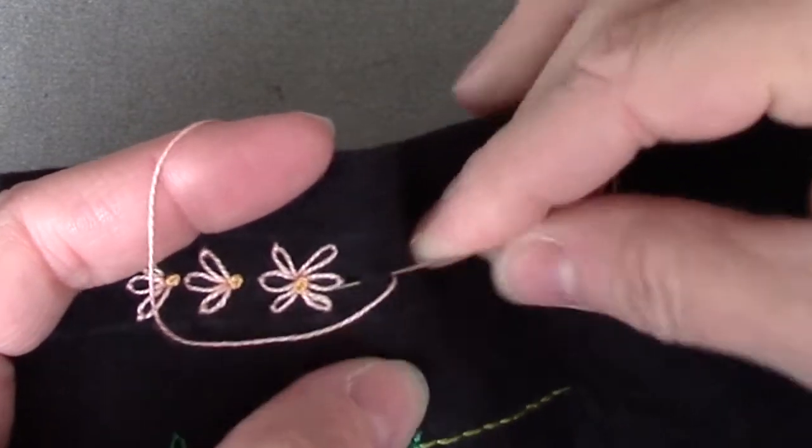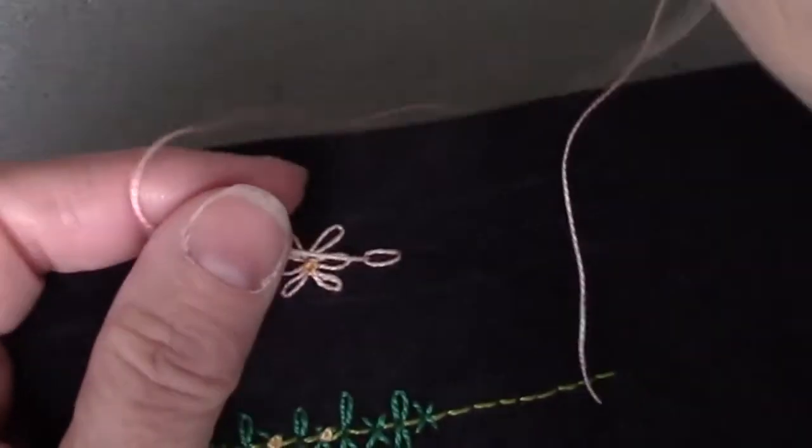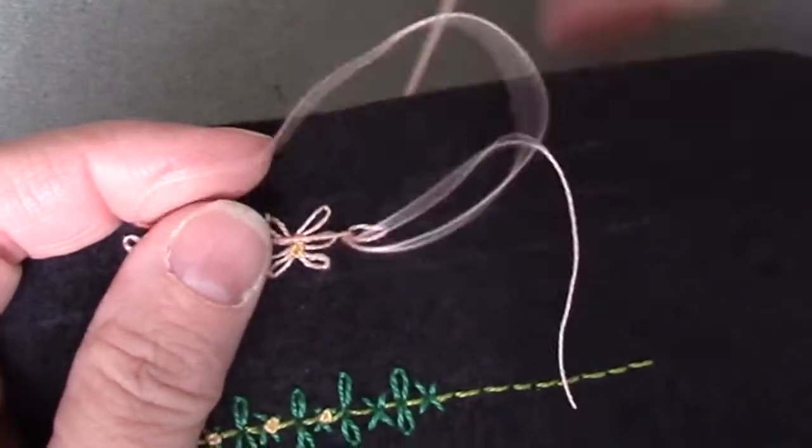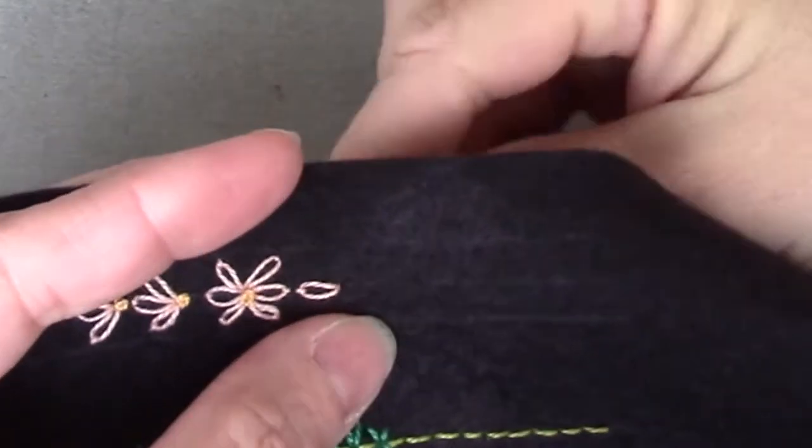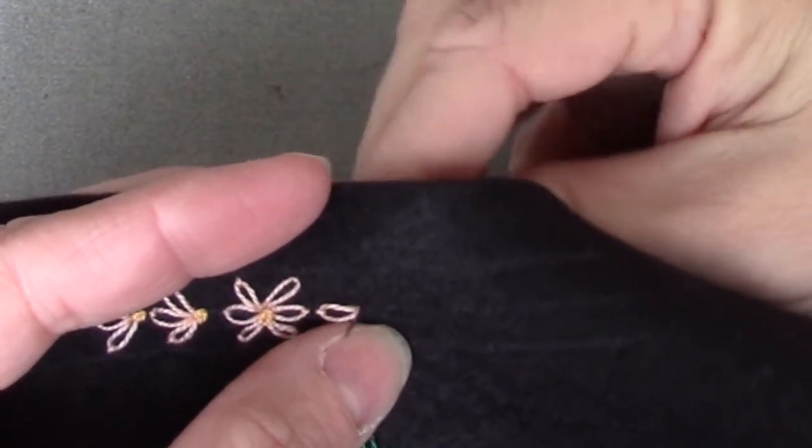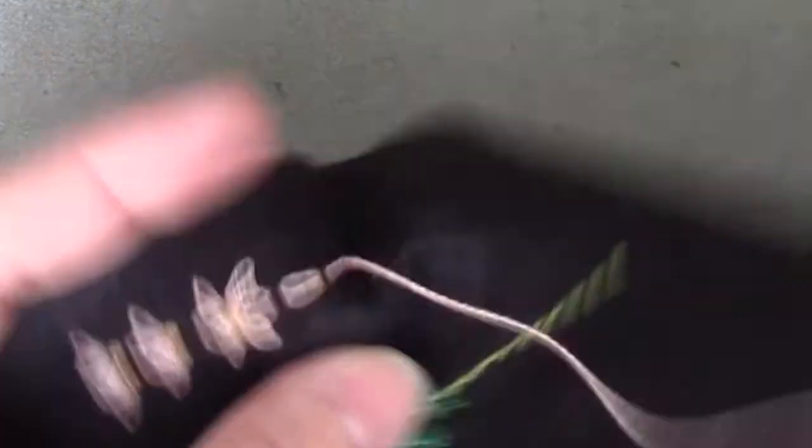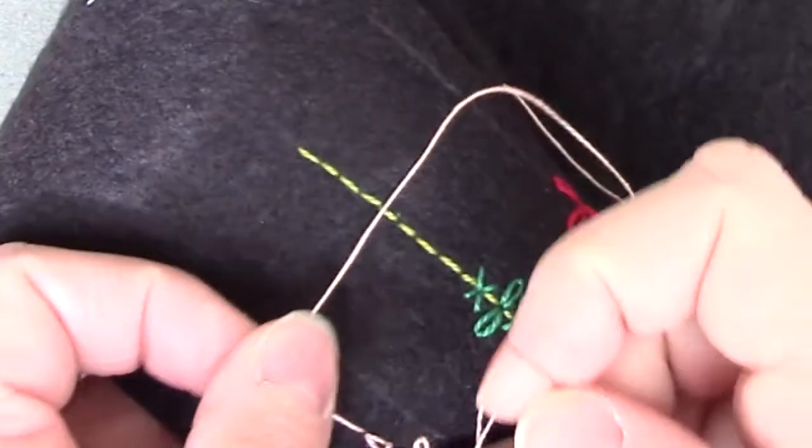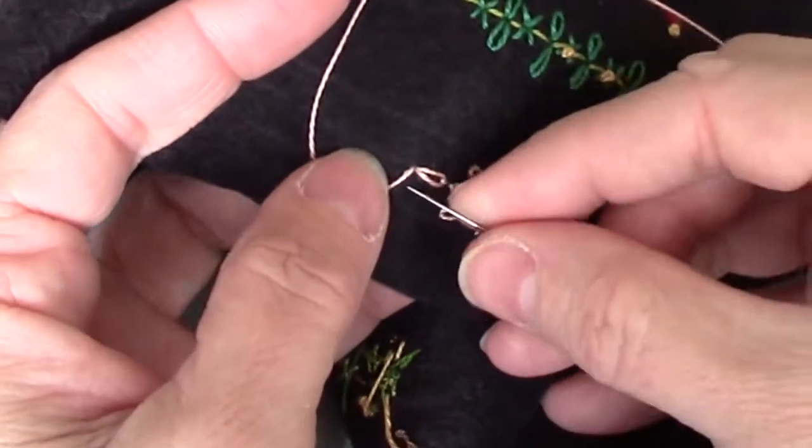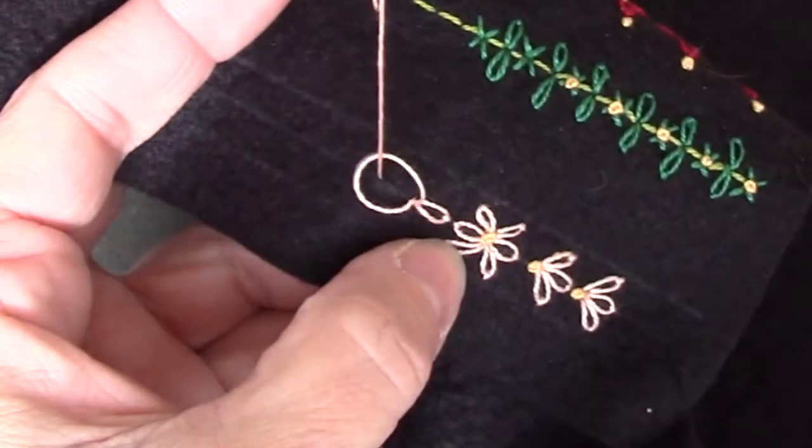I'm going to start by in the center making a group of six lazy daisies. I put two of them on the horizontal line, and I really would like to come up in the same hole for all six of them. I am trying to keep the petals about the same length.